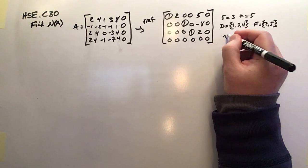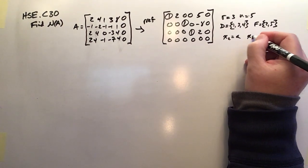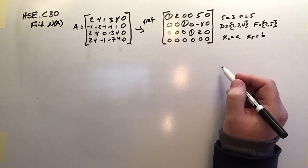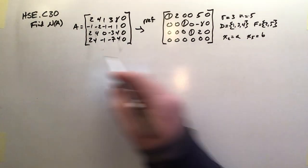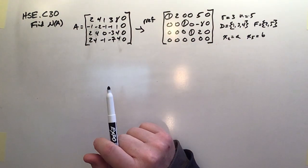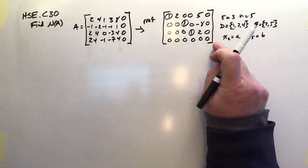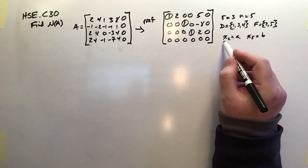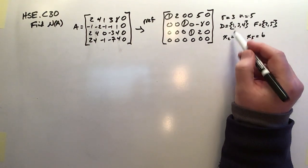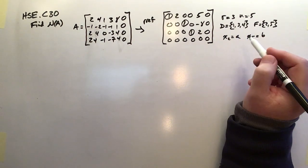So I'll just start off with x2 being equal to A and x5 being equal to B. And that way I can start to write the solution, which in this case is going to be the null set for A. The null space actually is what it's actually called, not the null set. So with x2 being A and x5 being B, because those are the free variables, let's look at the dependent variables. So 1, 3, and 4.